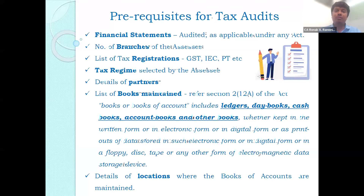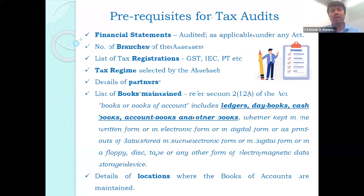The books of accounts maintained by the assessee are to be mentioned. One can refer to Section 2(12A) of the Income Tax Act, which defines what constitutes books of accounts — ledgers, day books, cash books, account books, and other books maintained in electronic form. The details of books audited by the auditor can be mentioned here.